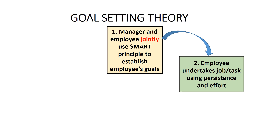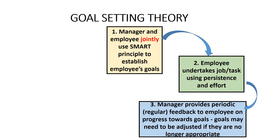The third stage is that the manager provides periodic — that is, regular — feedback to the employee. This enables the manager and the employee to adjust the goals if they've ceased to be appropriate, for example because of unforeseen events. It also enables them to determine how the employee is progressing towards the achievement of the goals, and whether the employee may need to do something differently to ensure the goals are achieved. This is why the goals have to be measurable: if they are not measurable, it's not possible to determine the employee's progress against these goals.